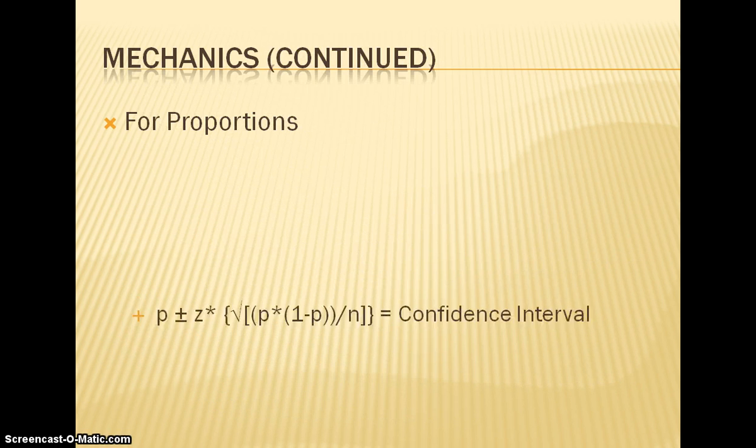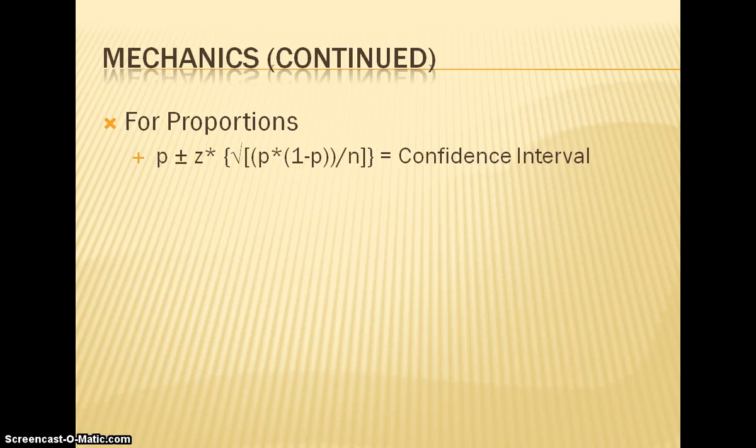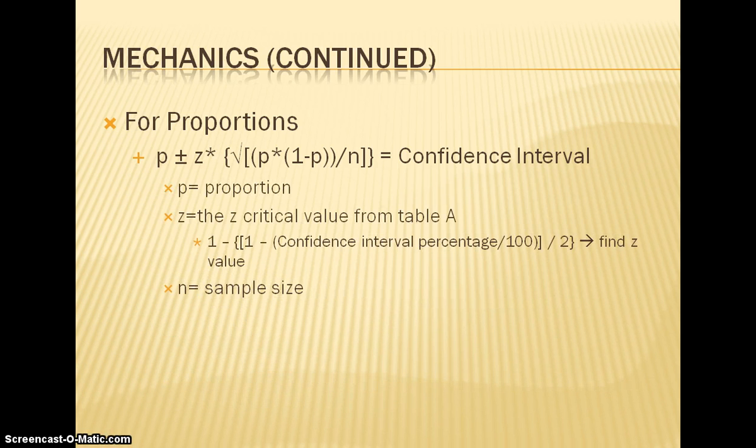Now for proportions. The formula would be p plus or minus z times the square root of p times (1 minus p) over n. p is the proportion, z is the z-critical value from table A, and you find this value the same way as you would for means, and n is the sample size.